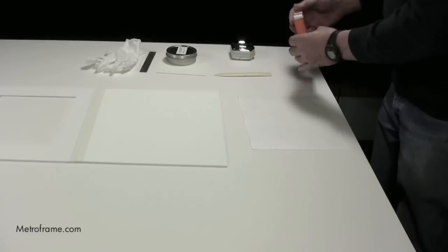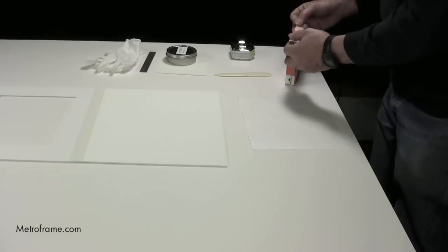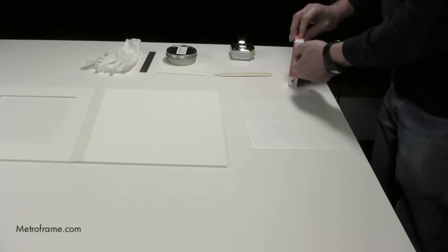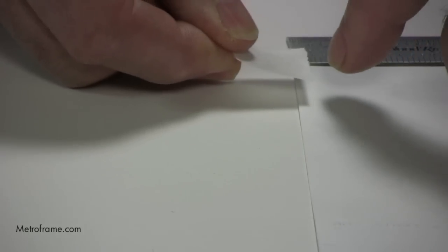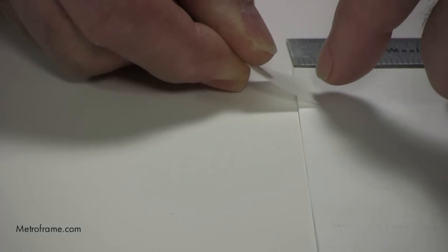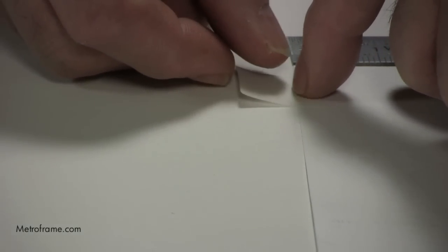To start the project, tear off a piece of tape about an inch long. When placing the tape on the artwork or photograph, we recommend you put it in about a quarter inch from the top and slightly in from the edge.